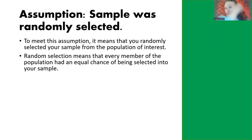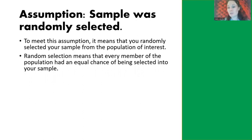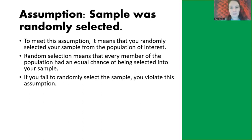In this example, that would mean every NBA player would have had an equal chance of being selected into our sample, which is not true because we used a convenience sample. So we violated the random selection assumption. If you do not randomly select your sample, you violate this assumption, just like we did in our example.